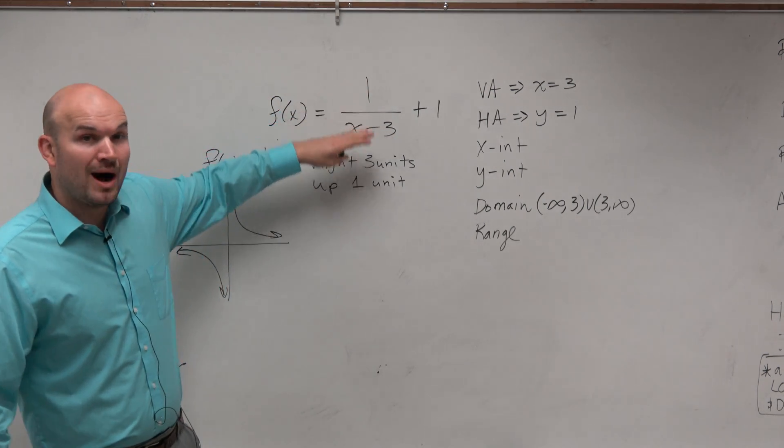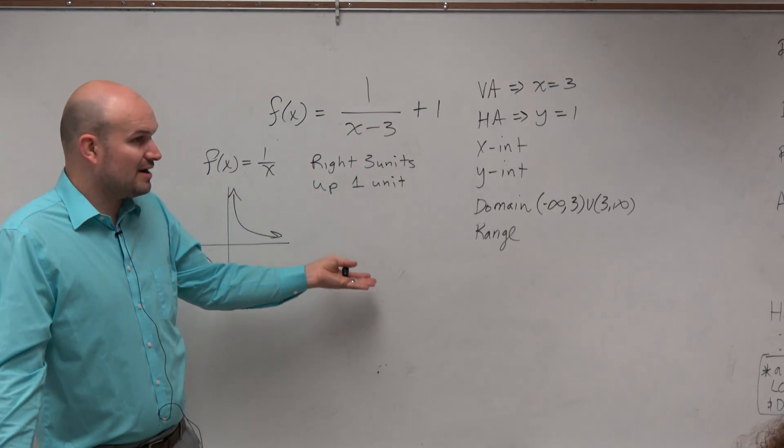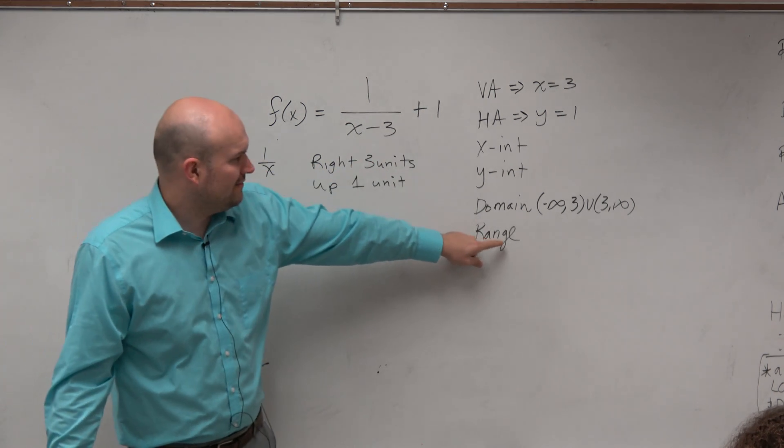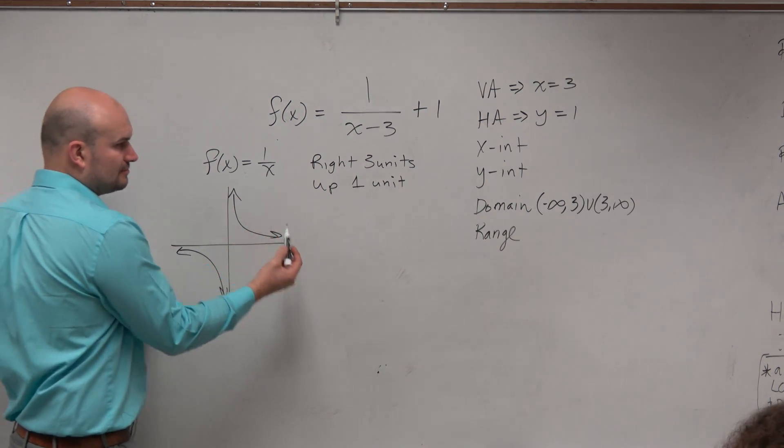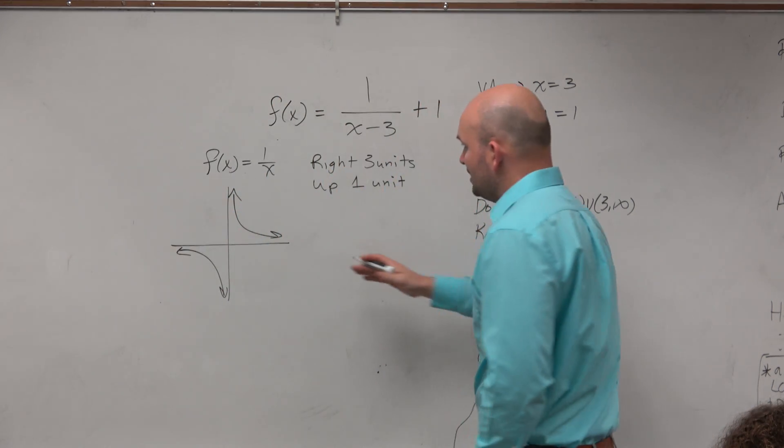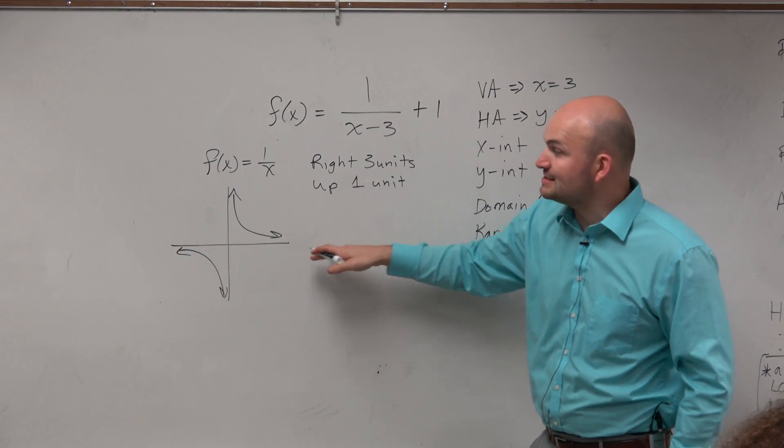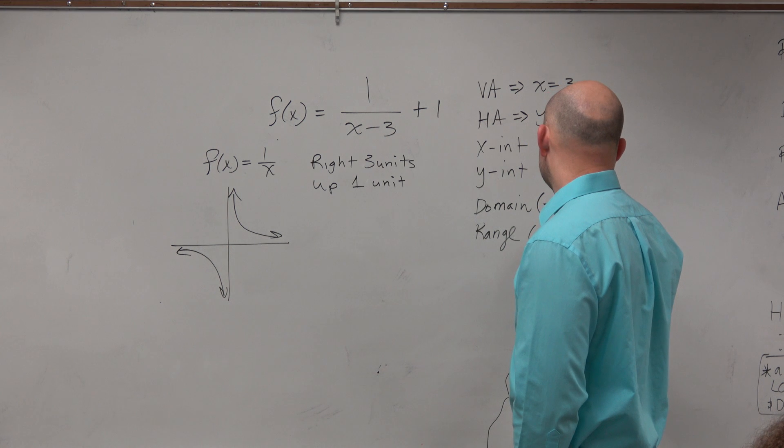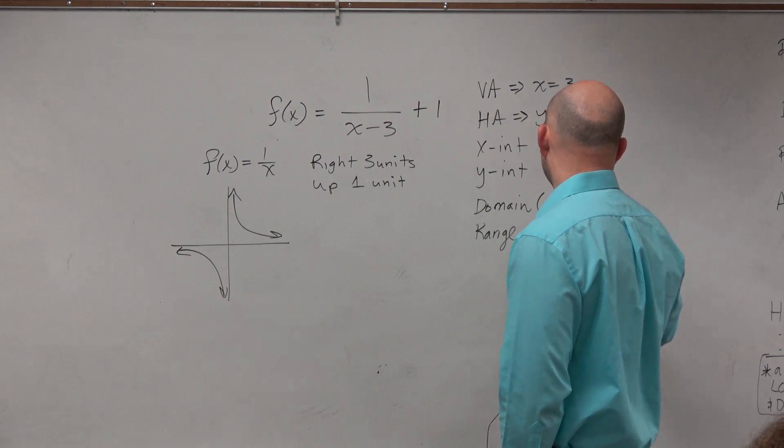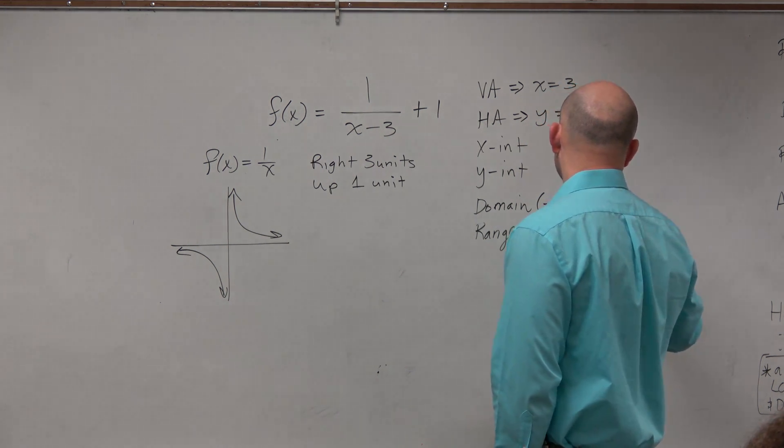The range is going to be the set of all y values. Now I can try to figure out what this graph looks like, but I kind of have an idea. If all I'm doing is shifting this graph up one unit, then my range is going to be all real numbers except where the graph approaches. Because you guys can see, it doesn't cross this horizontal asymptote. So that is going to be negative infinity to 1 union 1 to infinity.